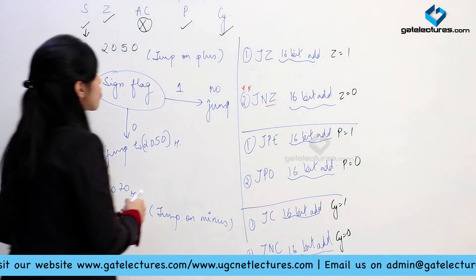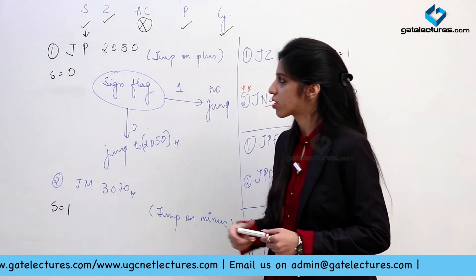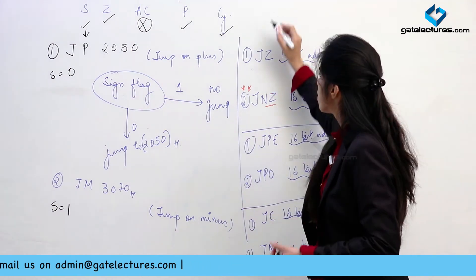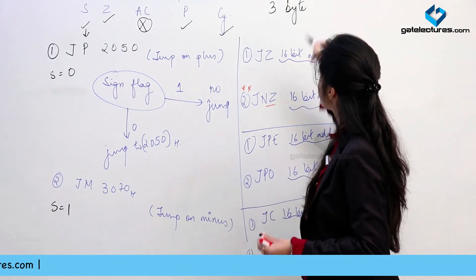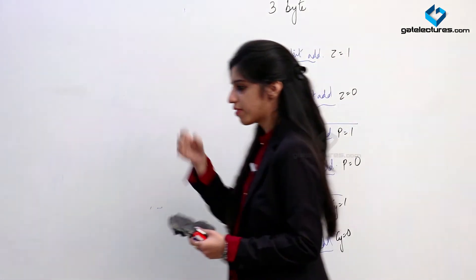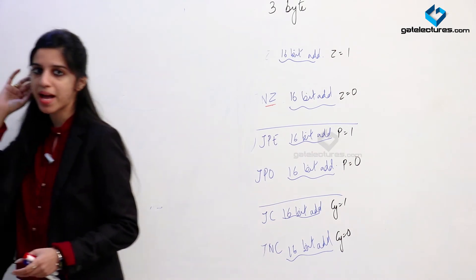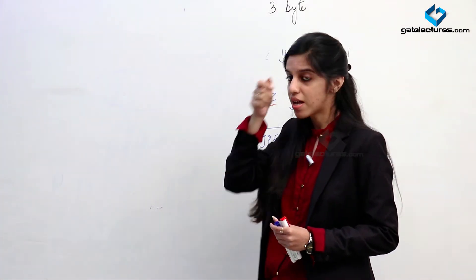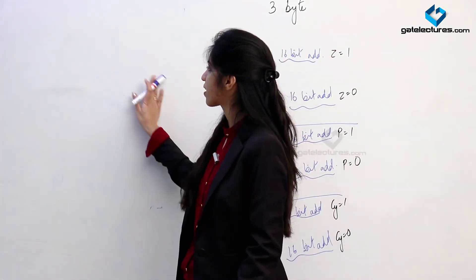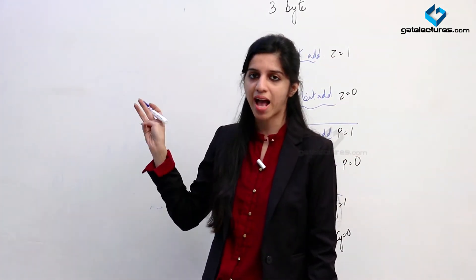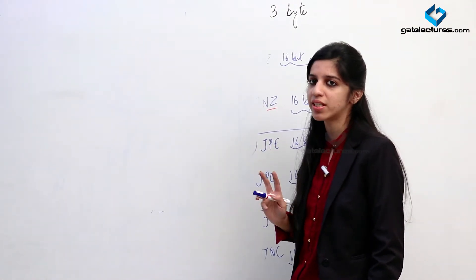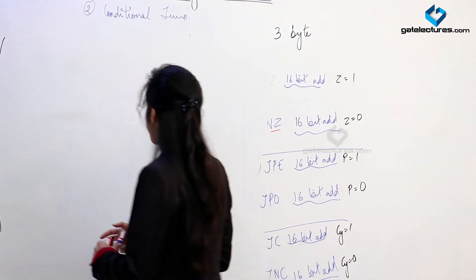Conditional jump is also a 3-byte long instruction — 1 byte for the opcode and 2 bytes for the address. Now let us look at its machine cycles. Unconditional jump had 10 T-states and 3 machine cycles. Conditional jump is not the same, because here we need to check the condition — we need to check the flags to determine if the jump has to be made or not — and checking the condition requires 2 T-states.